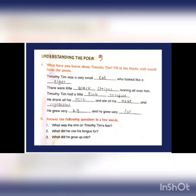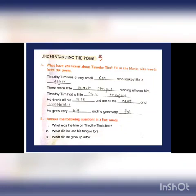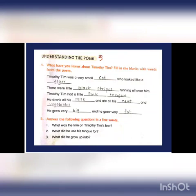Now Section B: Answer the following questions in a few words. Question 1: What was the trim on Timothy Tim's feet? Answer: The trim on Timothy Tim's feet was the white color of his paws. Question 2: What did he use his tongue for? Answer: He used his tongue as a spoon, comb and washcloth. Question 3: What did he grow up into? Answer: He grew up into a lazy old, sleepy old cat. Thank you, children.